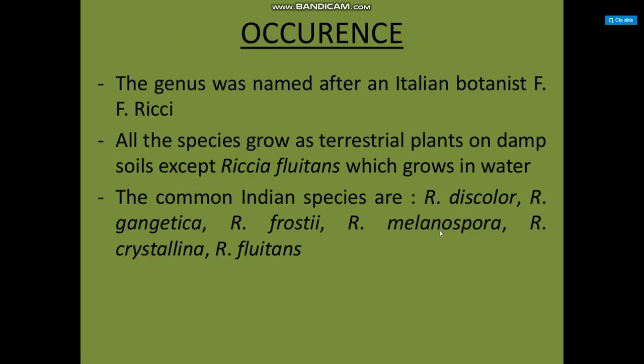Occurrence: the genus was named after an Italian botanist Ricci. All species grow as terrestrial plants on damp soil, except Riccia fluitans which grows in water. The common Indian species are Riccia discolor, Riccia gangetica, Riccia frostii, Riccia melanospora, Riccia crystallina, and Riccia fluitans.